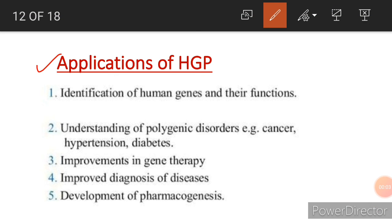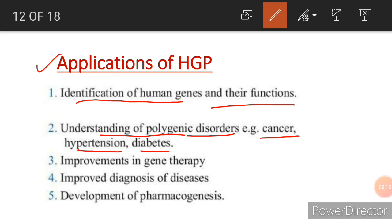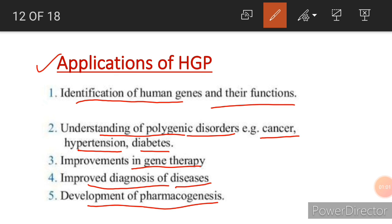Applications of the human genome project include: identification of human genes and their function, understanding of polygenic disorders such as cancer, hypertension and diabetes, improvement in gene therapy, improved diagnosis of diseases, and development of pharmacogenomics — that is, medicinal drugs. Further applications include study of tissues to obtain unique proteins, which will be very fruitful in future for genetically based improvements. In the next lecture, we will discuss DNA fingerprinting.